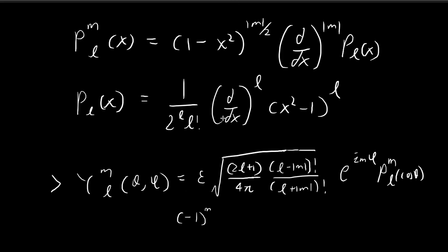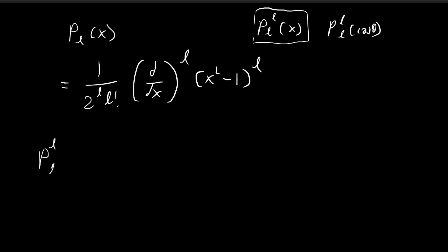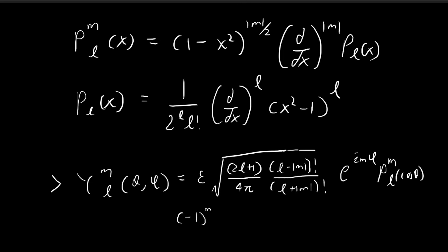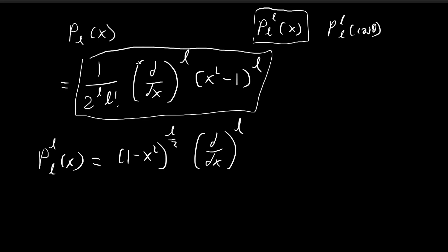Starting with P_L(x), we copy down the Legendre polynomial. Our next step is to construct the associated Legendre polynomial P_L^L(x). We substitute in the case M equals L, giving us (1 minus x²)^(L/2). Then for the derivative part, we have (d/dx)^L applied to the Legendre polynomial P_L(x). We can pull out the constants — the 2^L and L factorial — since they won't be affected by the d/dx operators.